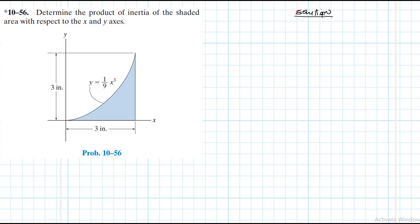So far we've dealt with moment of inertia over an area. Now we move to another extension, which is also a geometric property called the product of inertia of an area. This is a geometric property of an area or a shape.